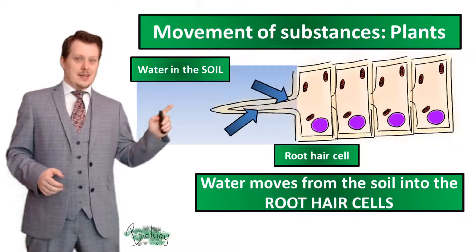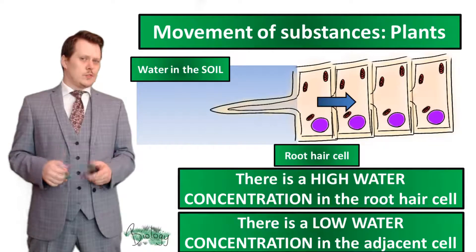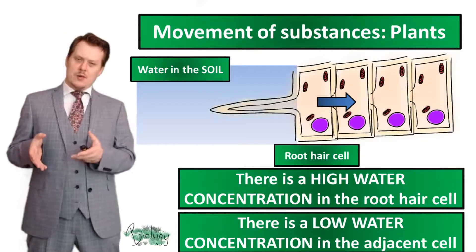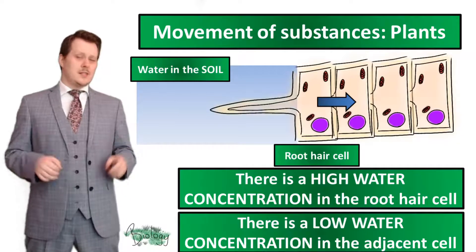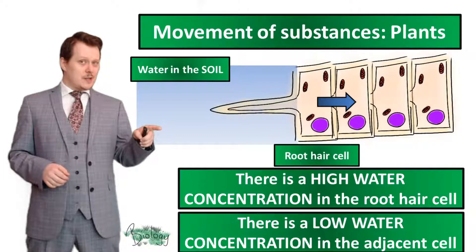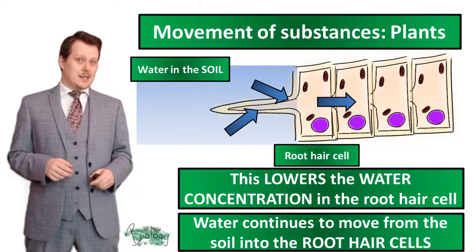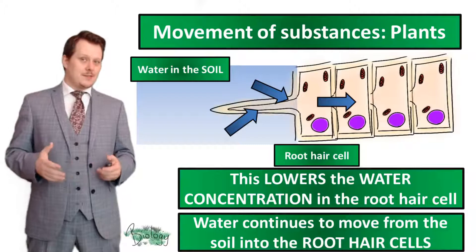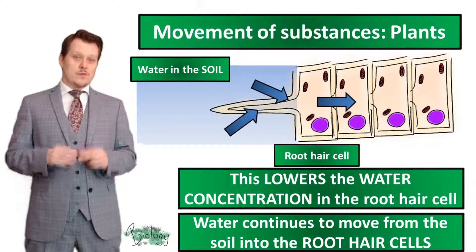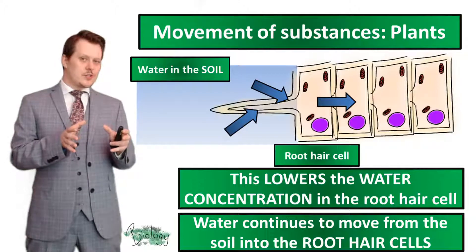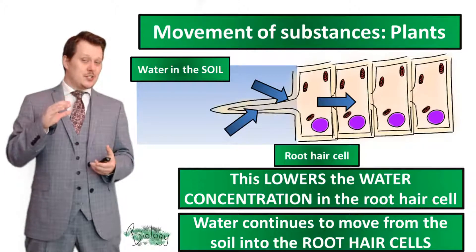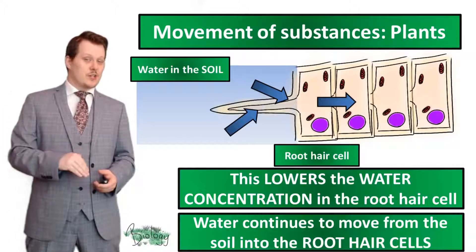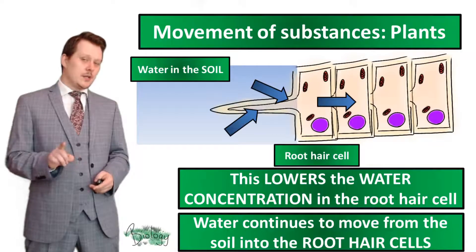Because all the water has been transported into the root hair cell, there is now a high concentration of water in that cell, but a low concentration in the cell next to it. Water moves from the root hair cell to the adjacent cell. As water is removed from the root hair cell, it lowers the water concentration, allowing more water to enter the root hair cell by diffusion. This process repeats — water moves from high concentration to low concentration down the concentration gradient — until the water has gone through all the cells and reaches the stem.